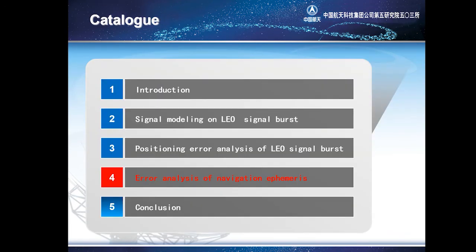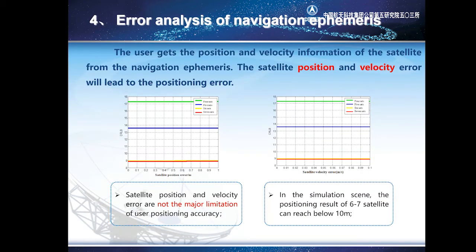The fourth part is error analysis of navigation ephemeris, simulating the influence of ephemeris position error and velocity error on positioning performance. According to the simulation results, it can be seen that satellite position and velocity errors are not the major limitation of user positioning accuracy. In the simulation, the positioning results with 6 to 7 satellites can reach below 10 meters.